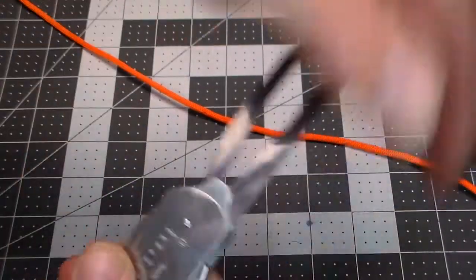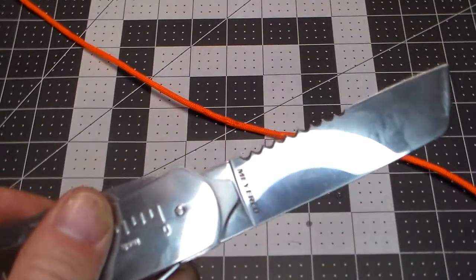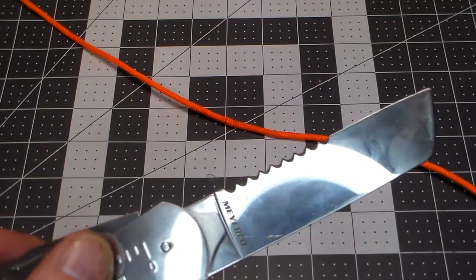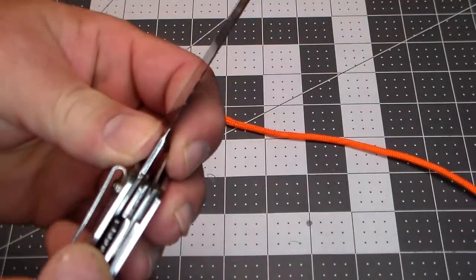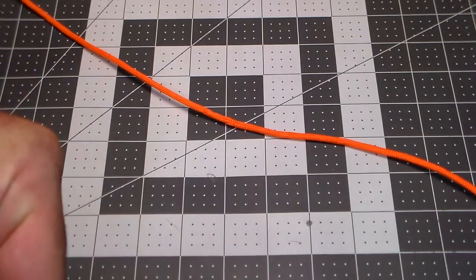And then last but not least we have a sheep's foot shaped blade. It's partially serrated for cutting heavy rope and that blade locks. There's a lock right here.